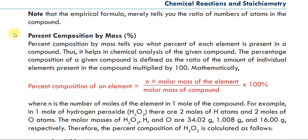What is percent composition by mass? Percent composition by mass tells you what percent of each element is present in a compound. It helps in the chemical analysis of a given compound. The percent composition of a given compound is defined as the ratio of the amount of individual element present in a compound multiplied by 100.